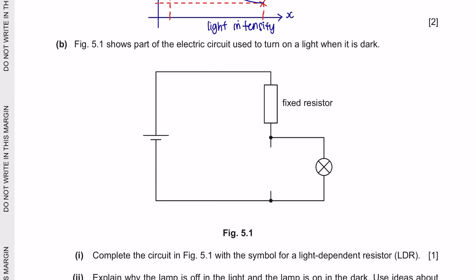Next question part B. Figure 5.1 shows part of the electric circuit used to turn on a light when it is dark. So remember, when it is dark, the light-dependent resistor receives low intensity of light, which results in a high resistance.